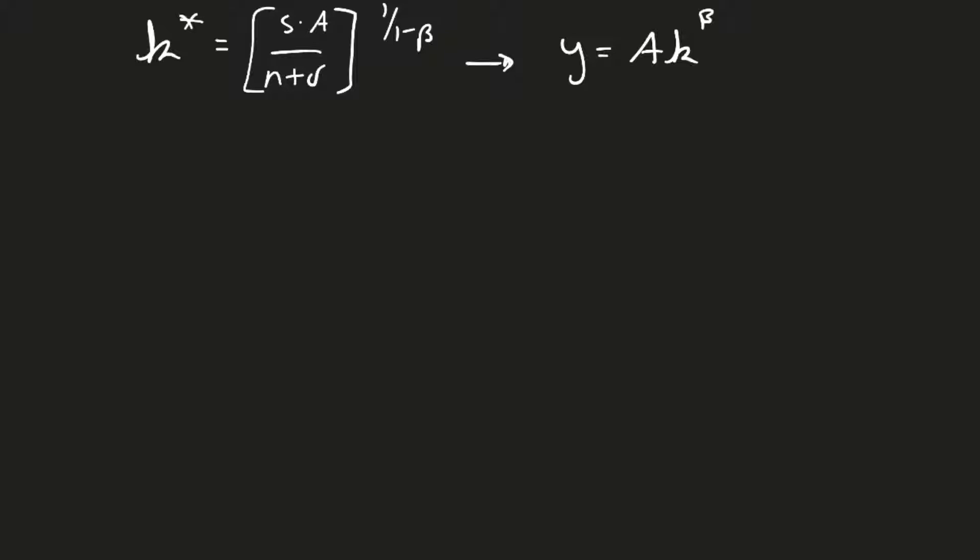Because that's what I would do. I would just plug in whatever number this is. If I knew what the number was of k star, I would just plug it in, raise it to beta, multiply it times a, and boom. But now let's do it for a general amount. Let's do it for just the general values.